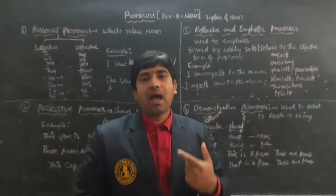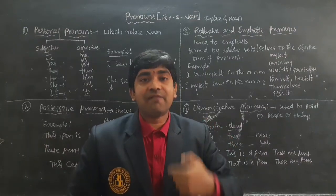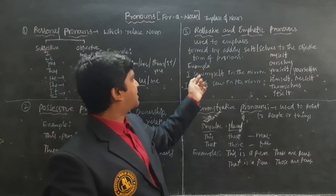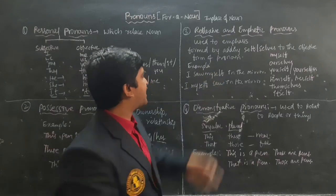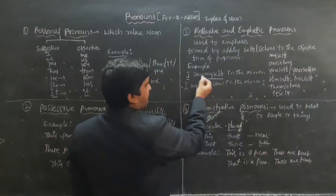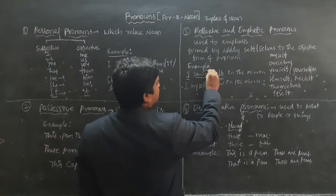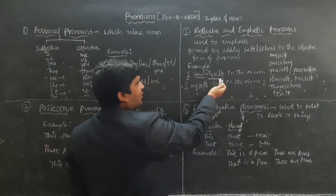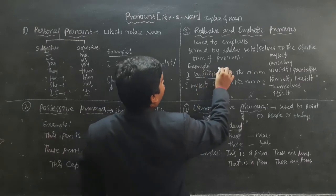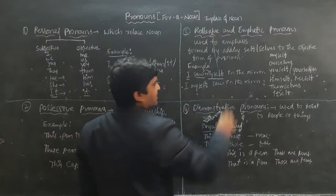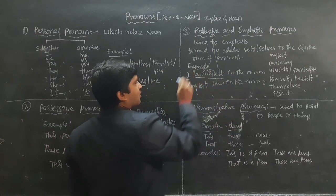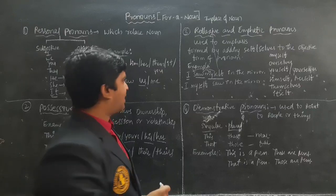For example: 'I saw myself.' After the verb, we use 'myself.' When we use it after the verb, we call it a reflexive pronoun — it reflects the same person, like seeing oneself in a mirror.